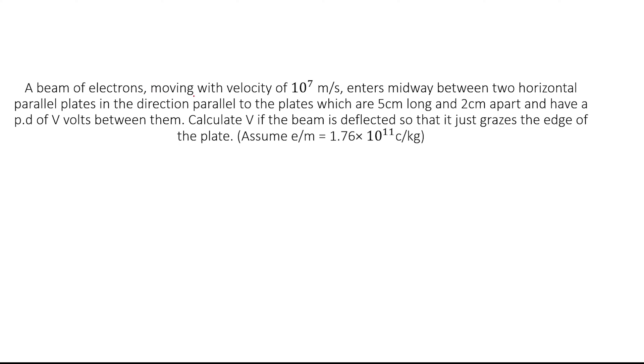A beam of electrons moving with a velocity of 10^7 meters per second enters midway between two horizontal parallel plates in the direction parallel to the plates which are 5 cm long and 2 cm apart.